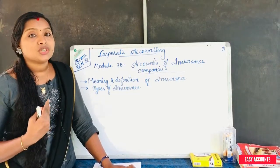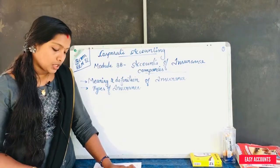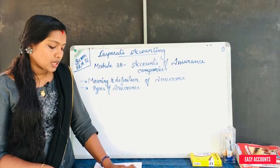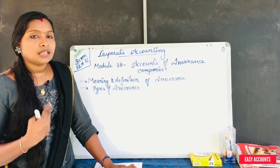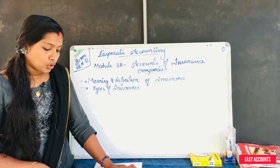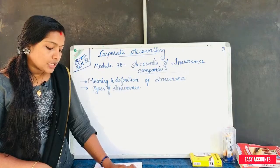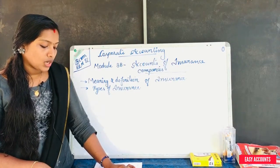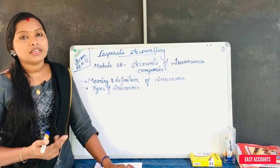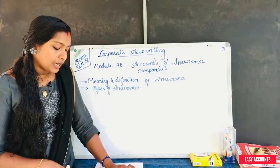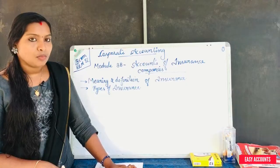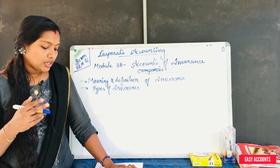The company or corporation that conducts the insurance business is known as the insurer. The person in whose favor the insurance is affected is known as the insured. The document containing the terms and conditions of an insurance contract is known as the policy.